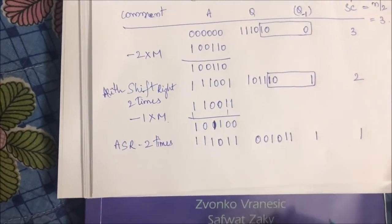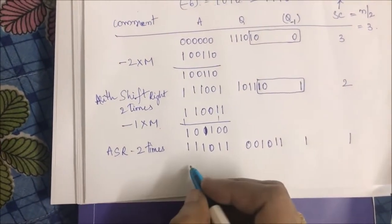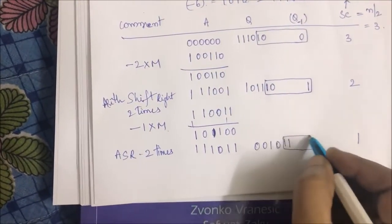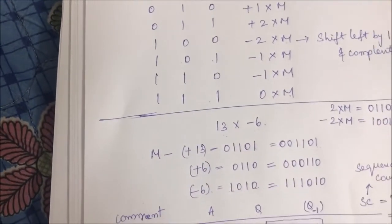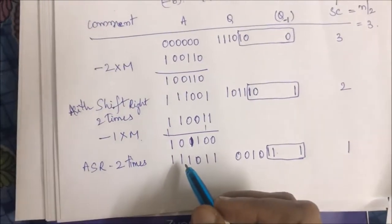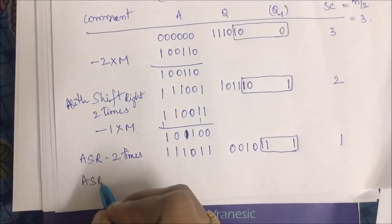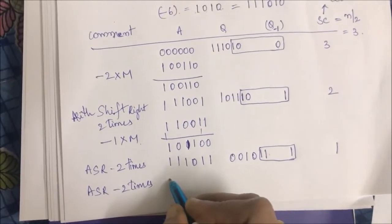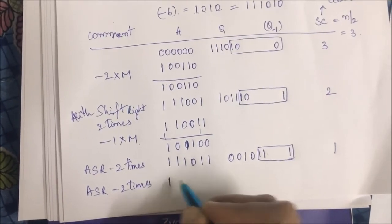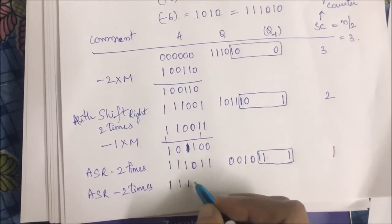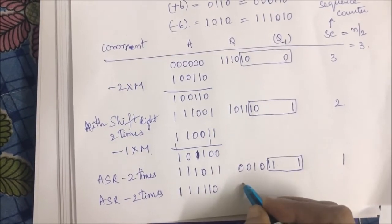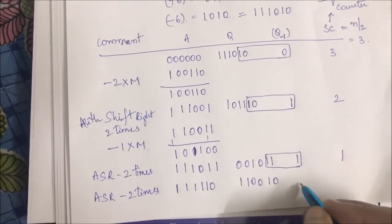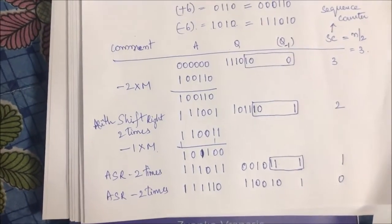Now the 3-bit combination is 1 1 1, which corresponds to 0×M in the table. Since 0×M means we need not add anything to A, we simply perform an arithmetic shift right 2 times. Arithmetic shift right means the sign bit remains as-is and the shift proceeds including the sign bit. Decrement the sequence counter to 0.